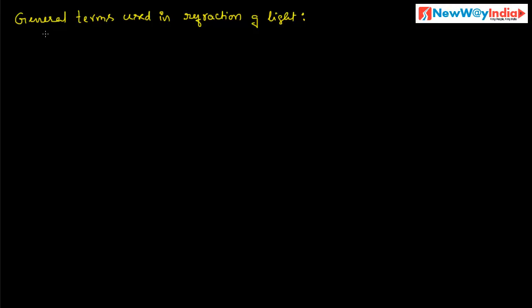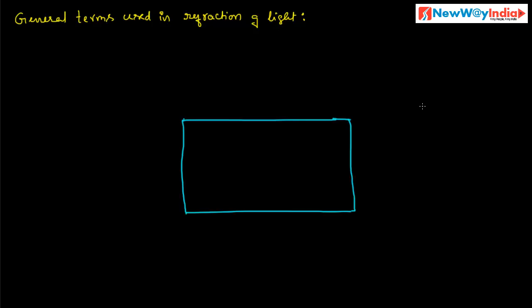Let us discuss the general terms used in refraction of light. Consider a glass block. This is the rarer medium — air — and this is the denser medium — glass.